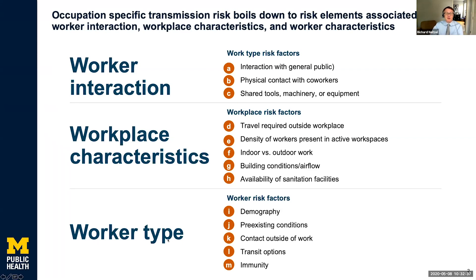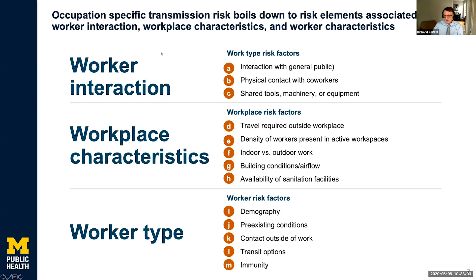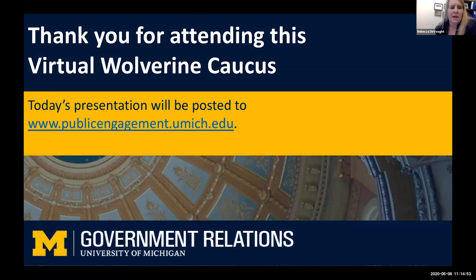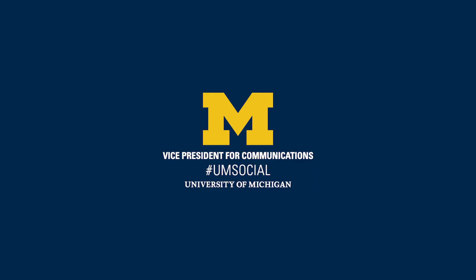We also know that certain types of workers may be at increased risk. We have to consider things like demographics, pre-existing health conditions, exposure outside the workplace to infected individuals, how people get to and from work, and immunity. We need to acknowledge that individual workers and their personal characteristics may increase or decrease their risk, but we have focused primarily on workplace and work-type characteristics. A sincere thank you to our panelists for taking the time to engage with the Wolverine Caucus, members of the legislature, and the University of Michigan community.